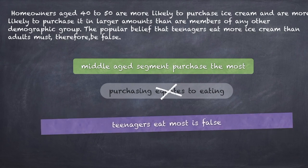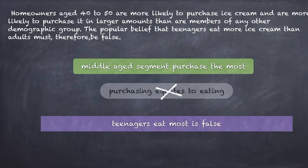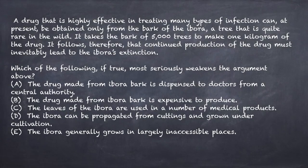Identifying the flaw was about identifying the assumption. Because then you can attack it or support it according to your needs. If I attack it, the conclusion becomes weakened.